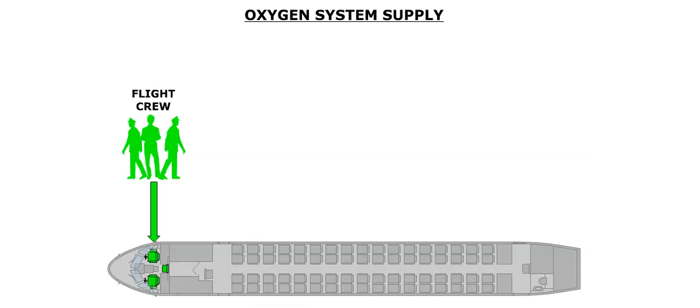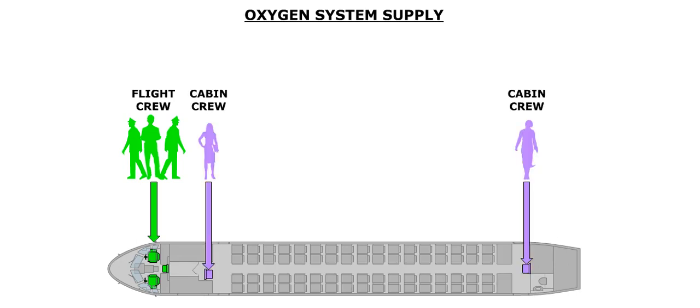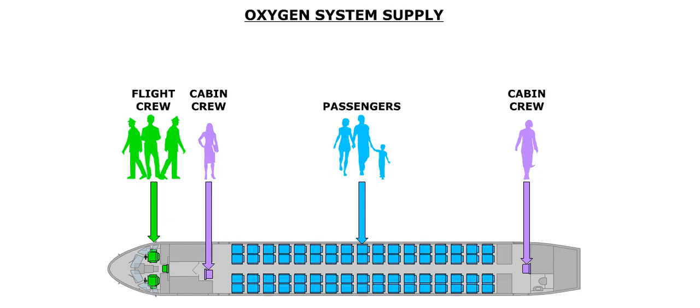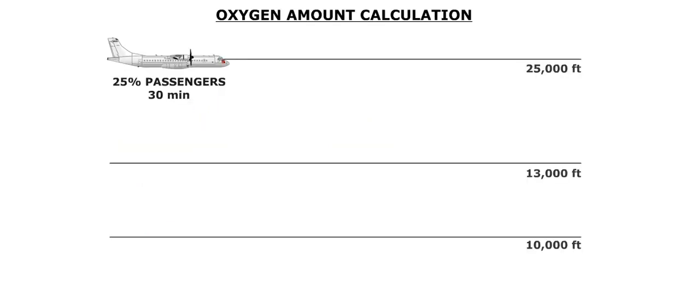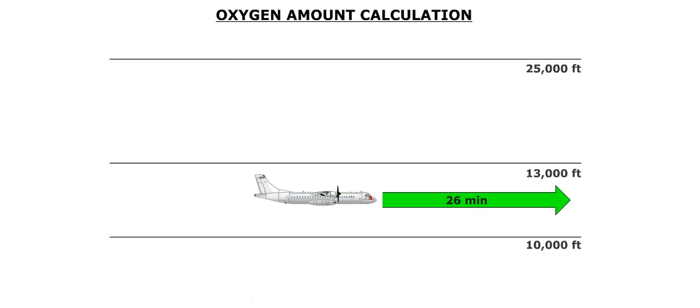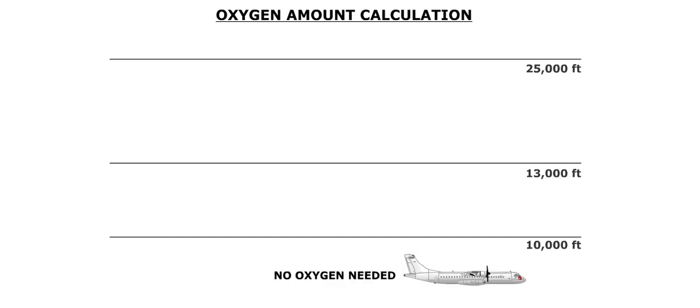The oxygen system is designed to supply oxygen to the flight deck crew members, the cabin crew members, and the passengers. The amount of oxygen is calculated to supply 25% of the passengers with a continuous diluted flow of oxygen for a period of 30 minutes. This 30-minute period includes 4 minutes to descend from 25,000 feet down to 13,000 feet, and then 26 minutes to continue flight at altitudes between 13,000 and 10,000 feet. Oxygen is not required for flights below 10,000 feet.